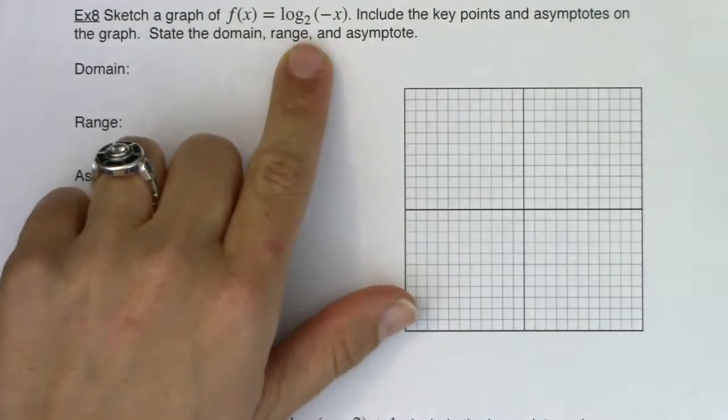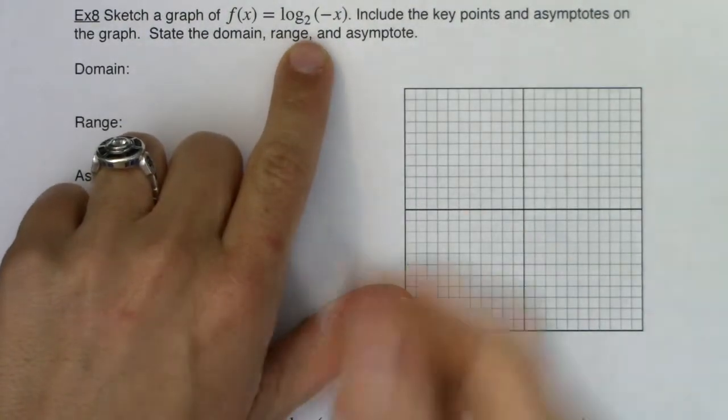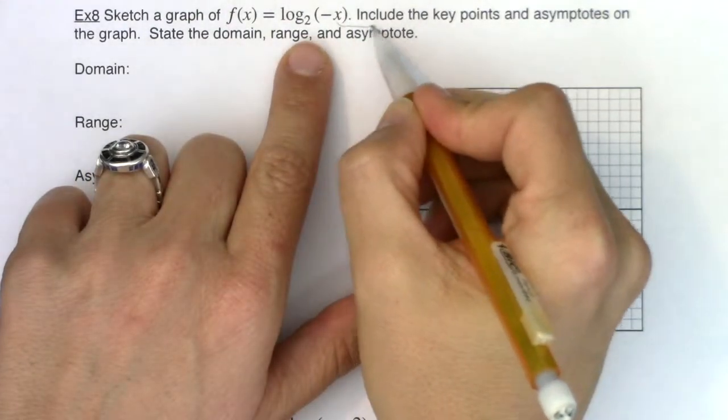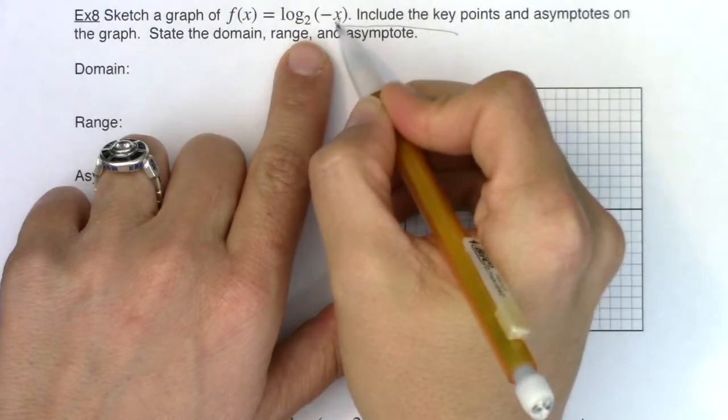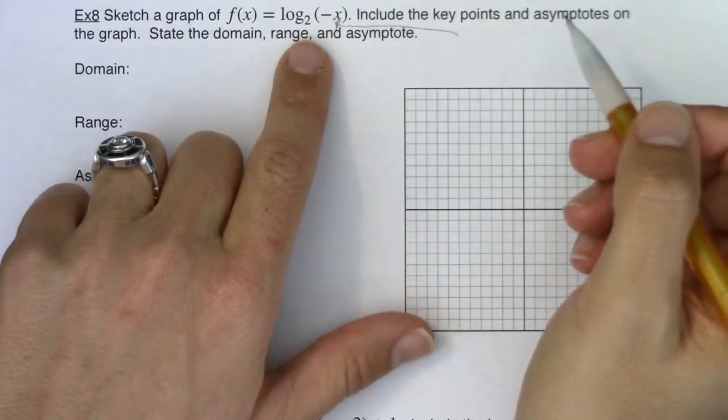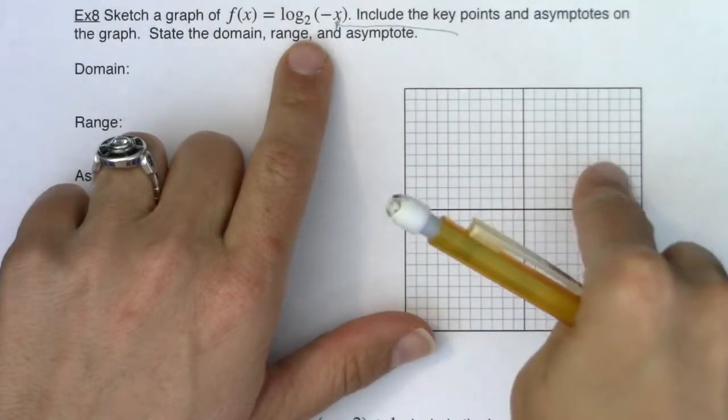Take note that the negative now is inside your grouping symbols, inside your argument. So when the negative symbol is inside your grouping symbols, that's going to reflect your graph over the y-axis.